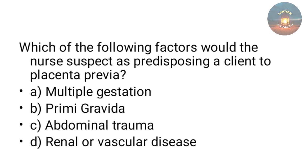Which of the following factors would the nurse expect as predisposing a client to placenta previa — multiple gestation, primigravida, abdominal trauma, or renal and vascular disease? The answer is multiple gestation. In multiple gestation there is a chance for placenta previa.